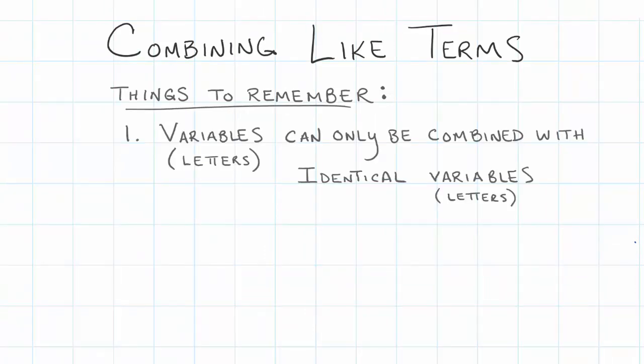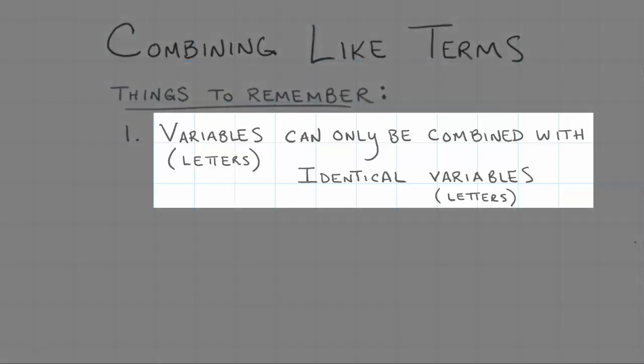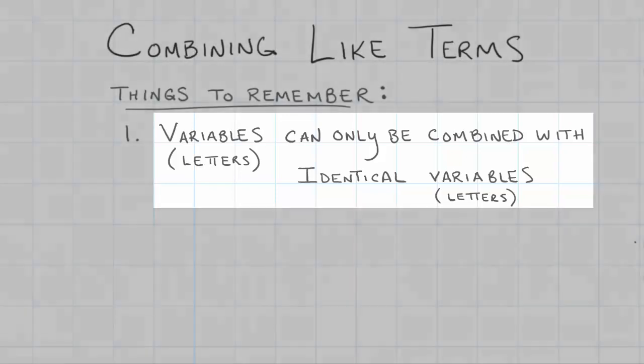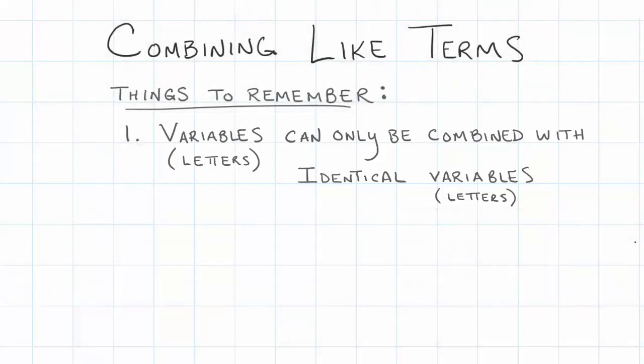The first is variables can only be combined with identical variables. If we have an x and a 3x those can go together because the x's are exactly the same.